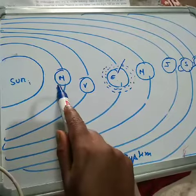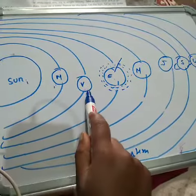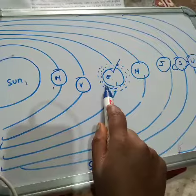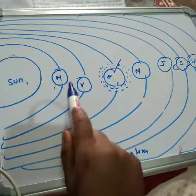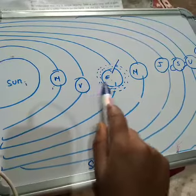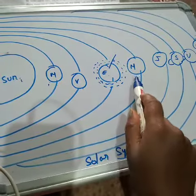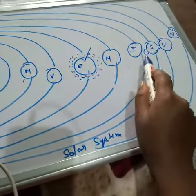After then it is Venus, then is Earth. Earth is the third planet. First is Mercury, second Venus, third Earth, then fourth is Mars, then Jupiter, then Saturn, Uranus and Neptune.